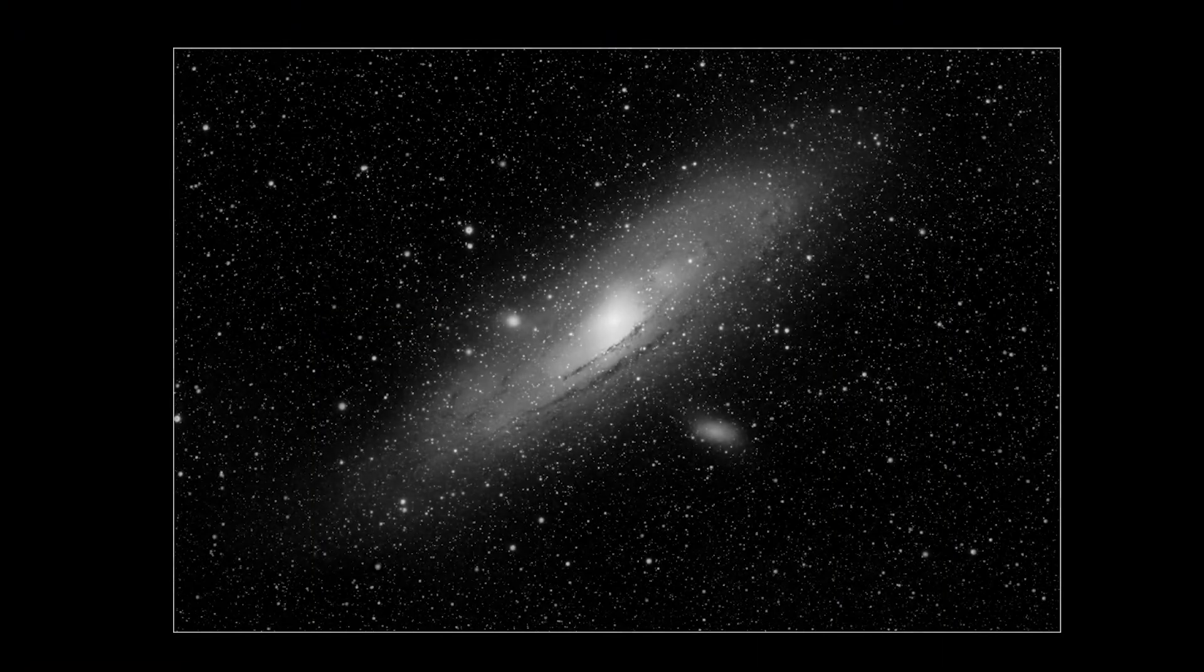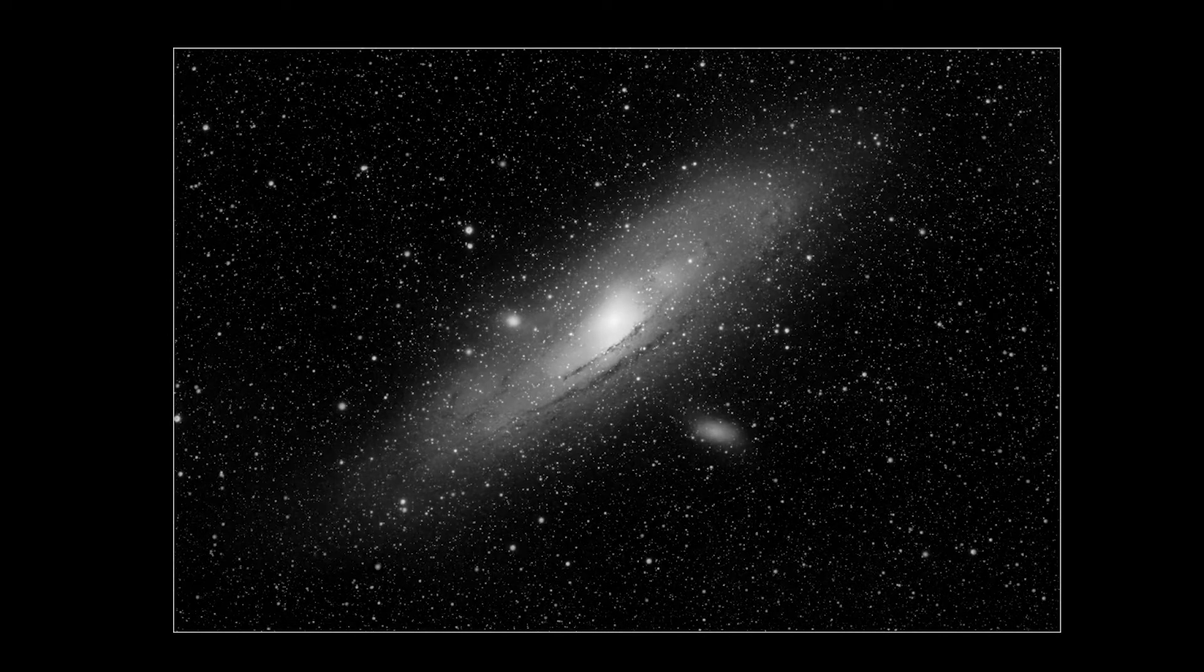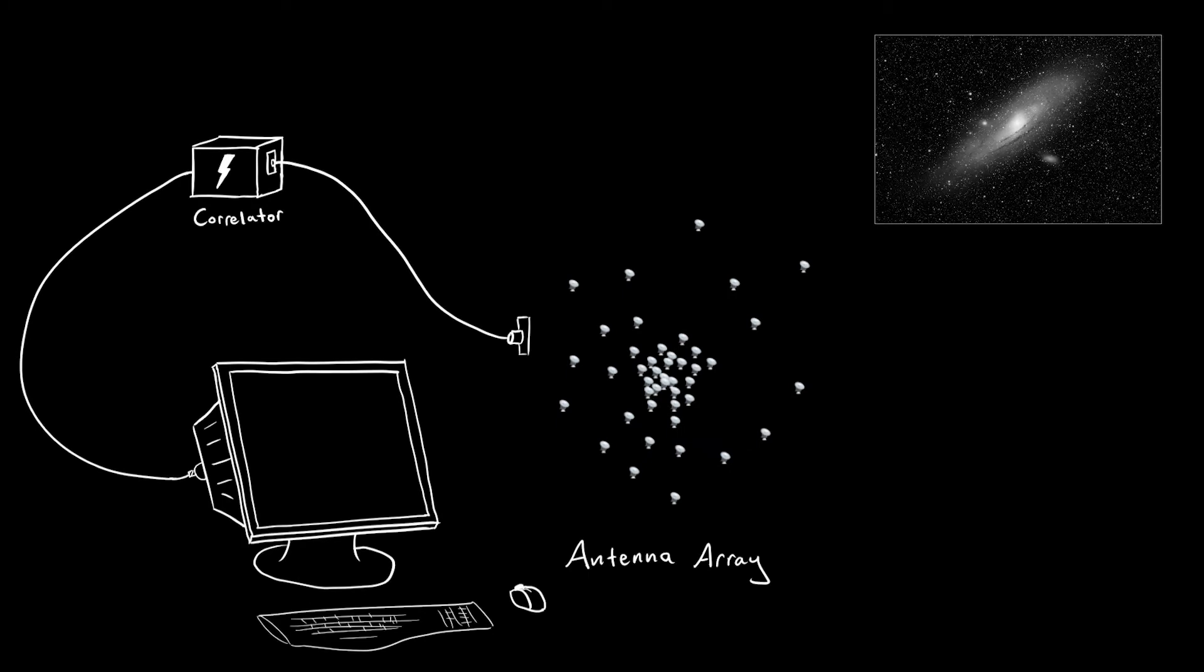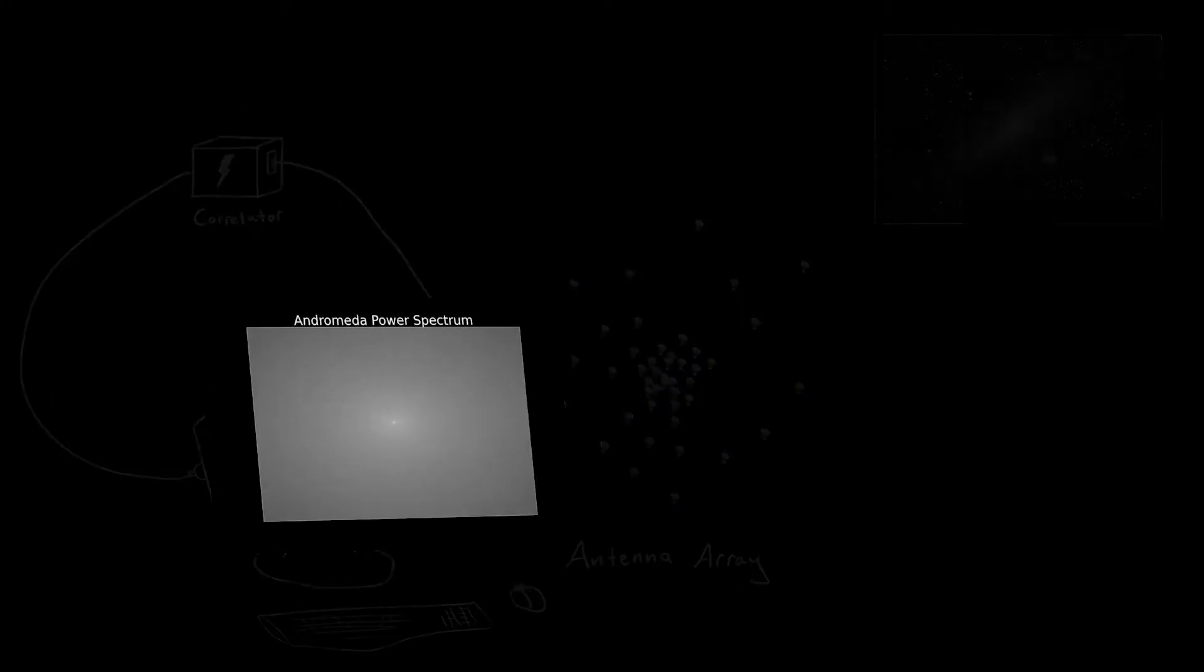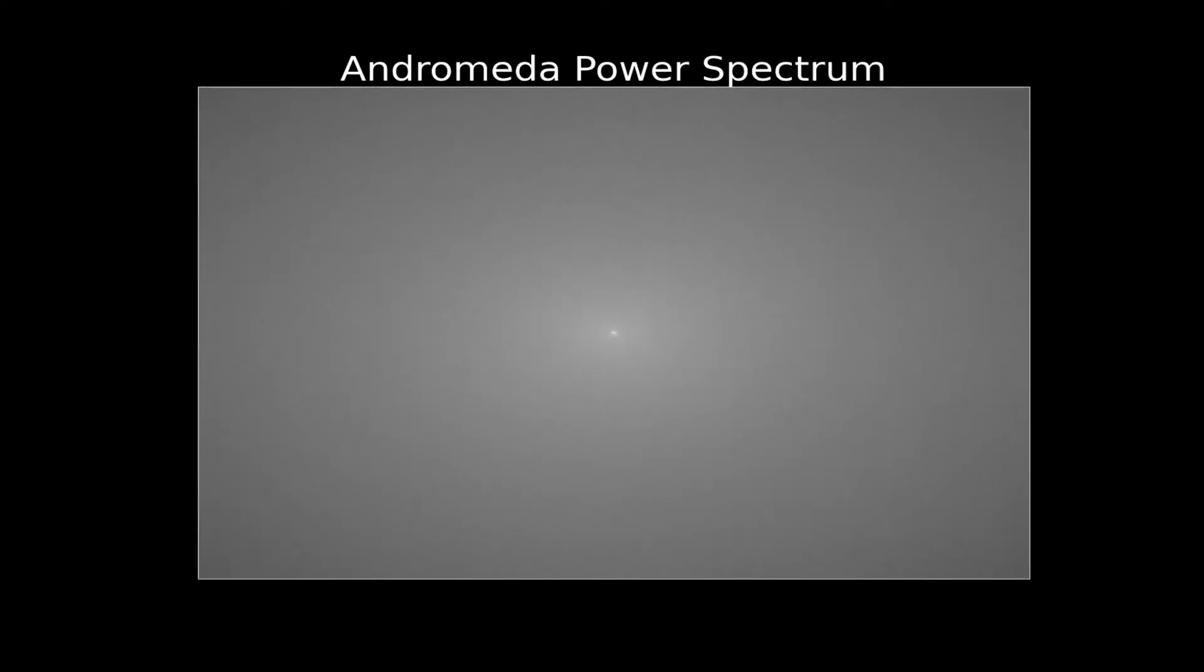In contrast to direct imaging, for example with a CCD camera on an optical telescope, an interferometer like ALMA or the Jansky Very Large Array samples the power spectrum of the sky brightness distribution. This power spectrum is equivalent to the Fourier transform of the sky, and is usually called the UV plane by radio astronomers.